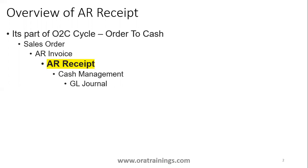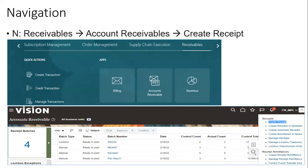Initially, we'll try to understand the navigation and how to create it. The navigation for creating a receipt is: navigate to the Receivables application, then click on Account Receivables, and then in the task list of your particular Account Receivables, click on the Create Receipt hyperlink.